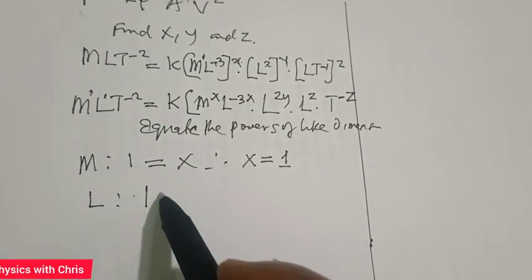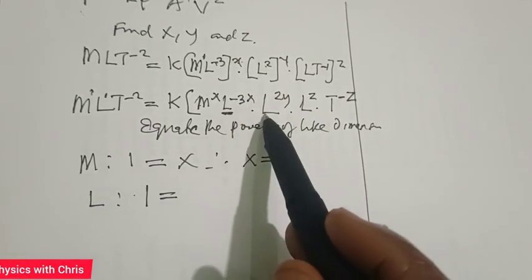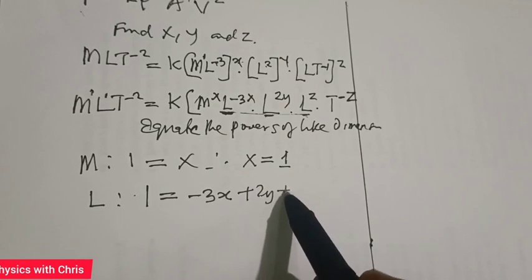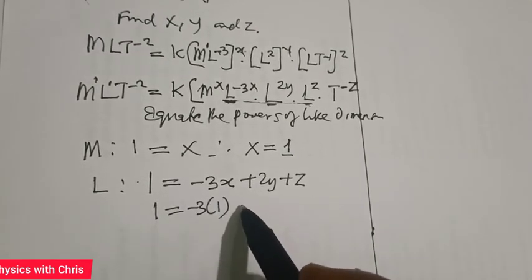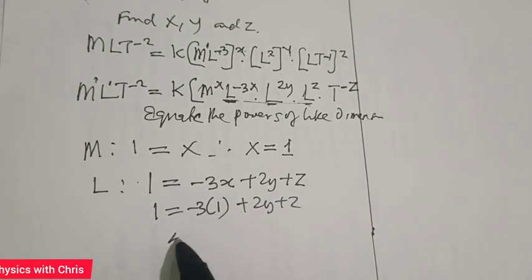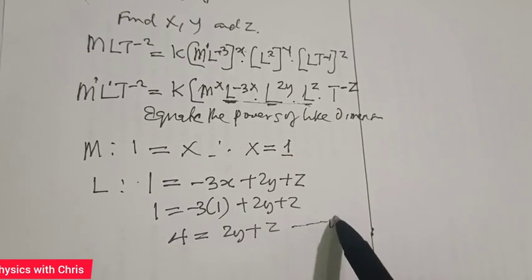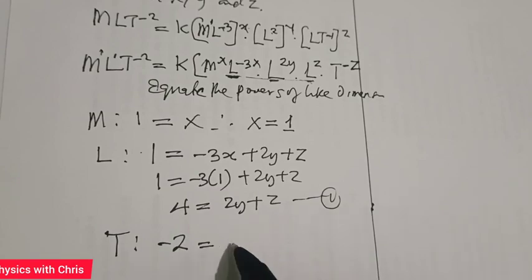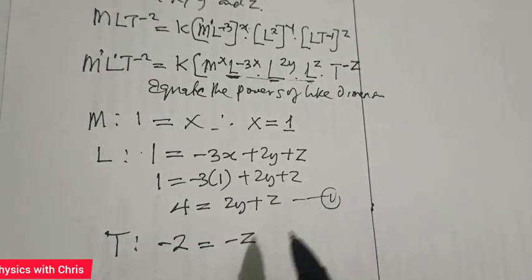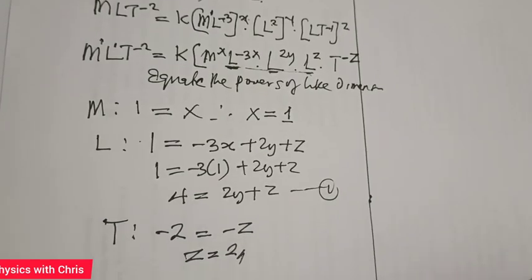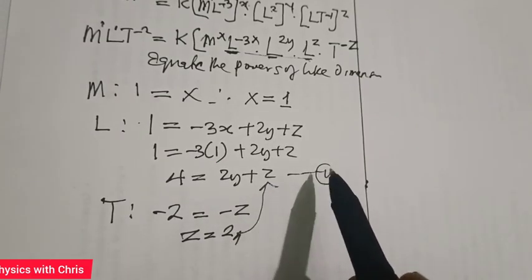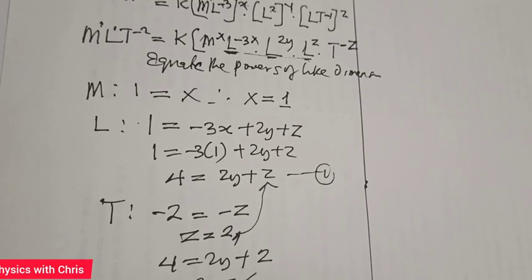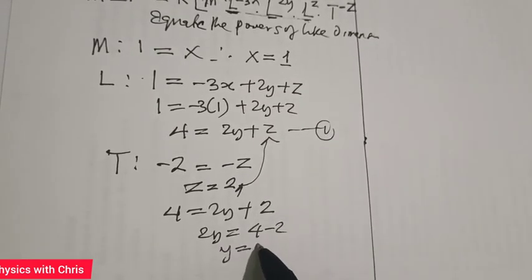Equating the powers of L: left-hand side is 1, right-hand side is −3x + 2y + z. Since x = 1, we get −3 + 2y + z = 1, so 2y + z = 4 — call this equation 1. Equating the powers of T: left-hand side is −2, right-hand side is −z, so z = 2. Substituting z = 2 into equation 1: 2y + 2 = 4, so 2y = 2, giving y = 1.